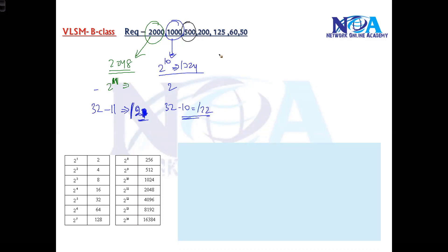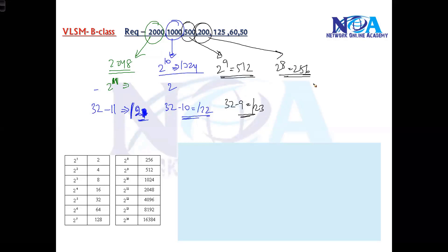For 500, the possible size is 2 to the power of 9, which is 512. So 32 minus 9 gives slash 23 as the subnet mask. For 200, 2 to the power of 8 gives 256, and 32 minus 8 gives slash 24. For 125, 2 to the power of 7 gives 128, and 32 minus 7 gives slash 25.